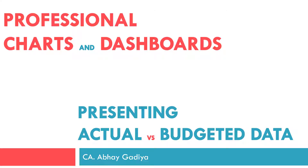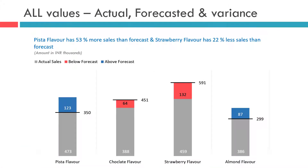Welcome to another video for presenting Actual versus Forecasted Sales data. In the previous video, we saw steps to create a chart showing Actual Sales data, Forecasted Sales data, and the difference between these two in a single chart. However, this visual had one limitation: whenever the Actual Sales were exceeding Forecasted Sales, some people were getting confused whether the Actual Sales is 473,000 or the total of 473,000 plus 1,23,000. Hence, we will be presenting this data using a slightly different format.